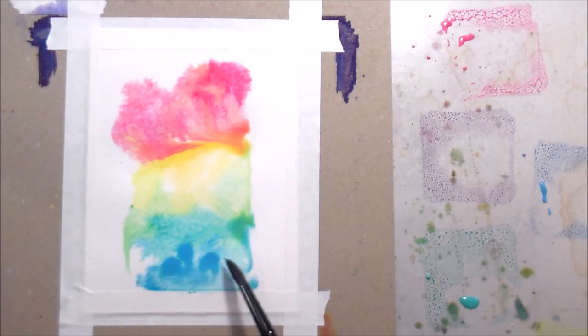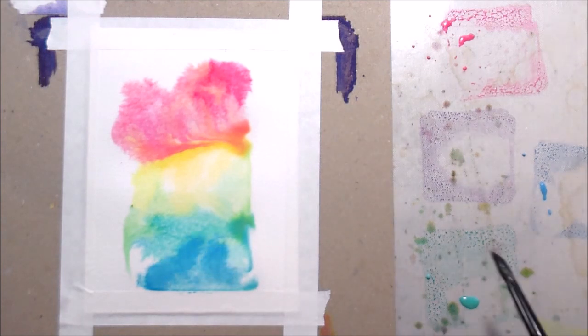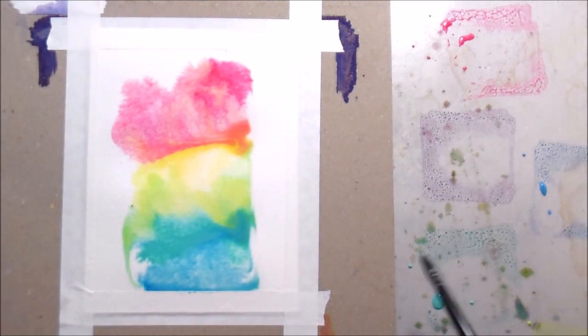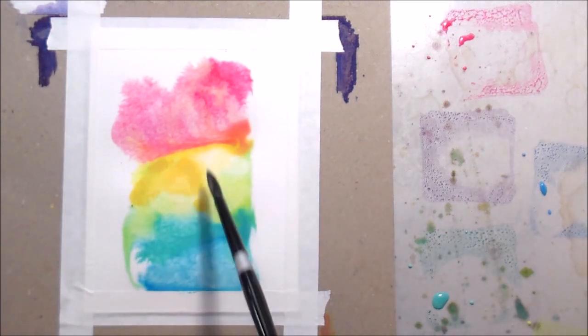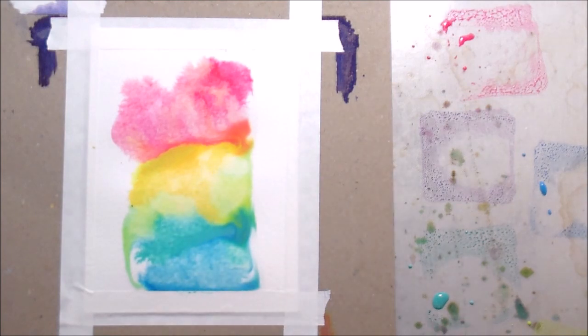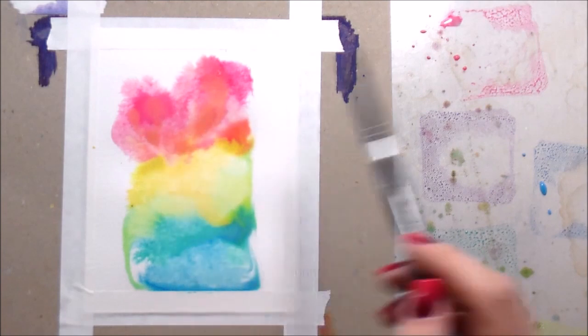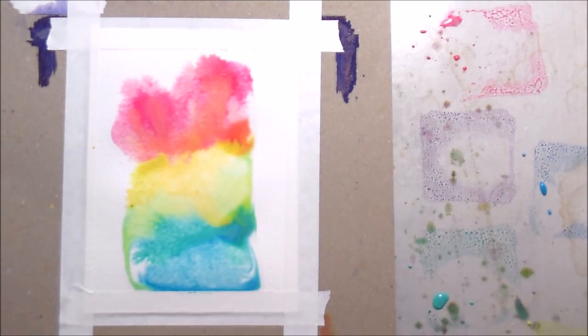I just went from Salty Ocean to Peacock Feathers, Twisted Citron, Fossilized Amber, and then Picked Raspberry. As long as it's wet you can keep going back in and adding pigment to make it darker, bolder color. It'll keep moving and mixing.